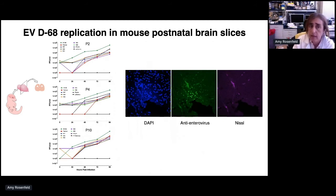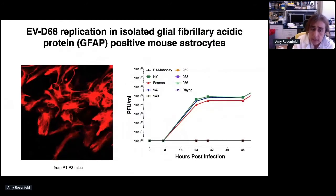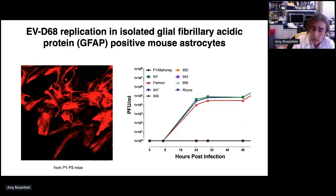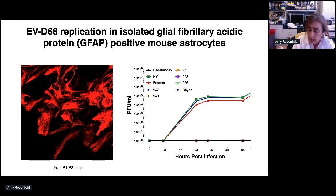We hypothesized that the non-neuronal infected cells are astrocytes. So we isolated astrocytes from wild-type mice, placed them in culture, and upon confluency performed indirect immunofluorescence using the antibody against GFAP to demonstrate purity — these cultures are 100% astrocytes with no neural-positive staining. We infected them with multiple isolates of EV68, and the New York, Vermont, and 947 isolates replicated efficiently in wild-type astrocytes.